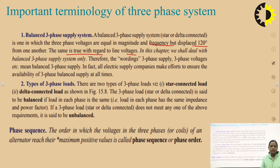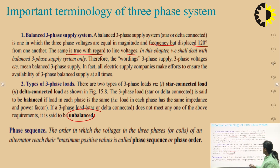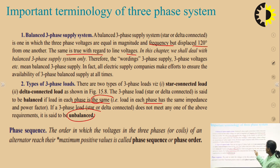All electric supply companies make effort to ensure availability of balanced three-phase supply at all times. There are two types of three-phase loads: star connected load and delta connected load. A three-phase load is said to be balanced if the load in each phase has the same impedance and power factor. If the load does not meet any one of these requirements, it is called an unbalanced load.